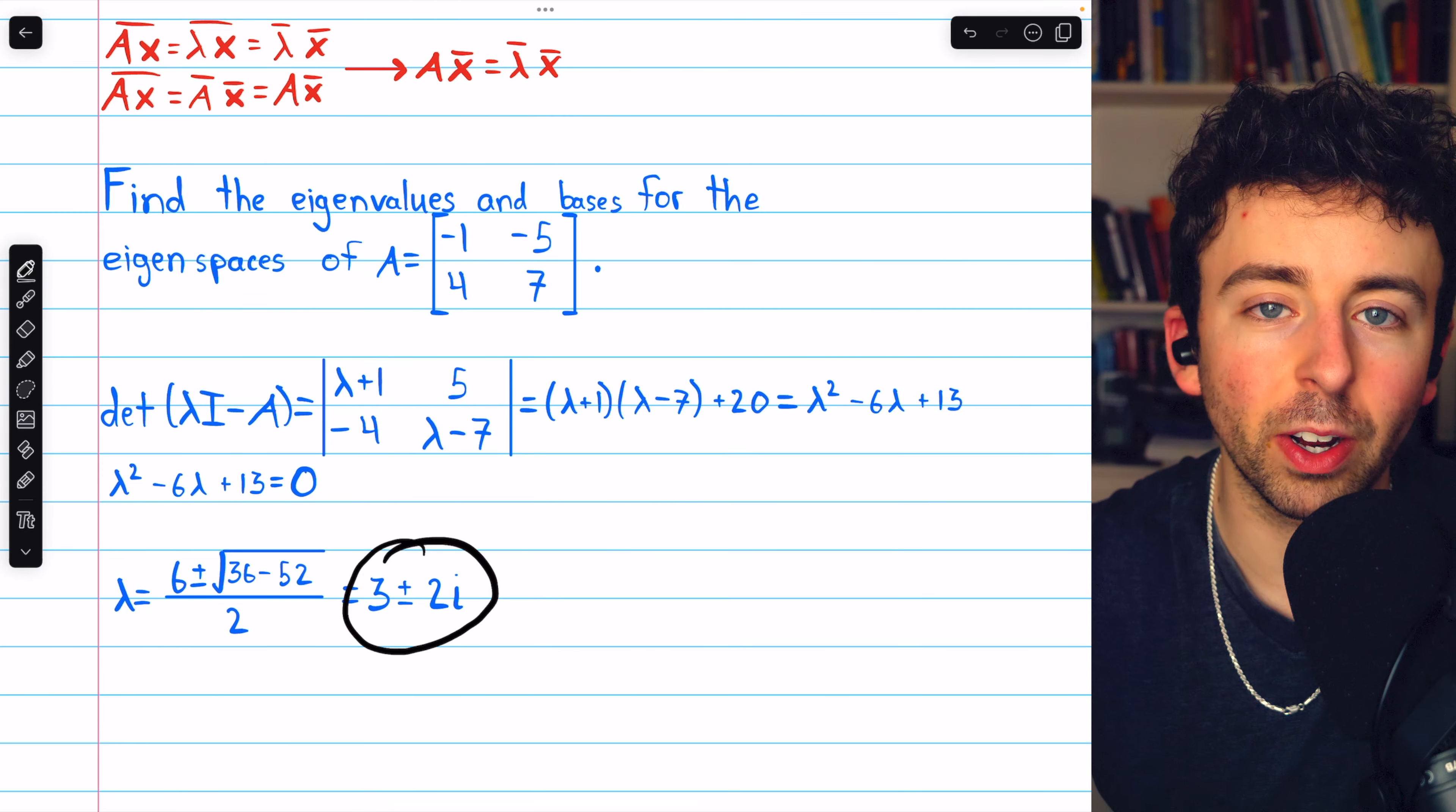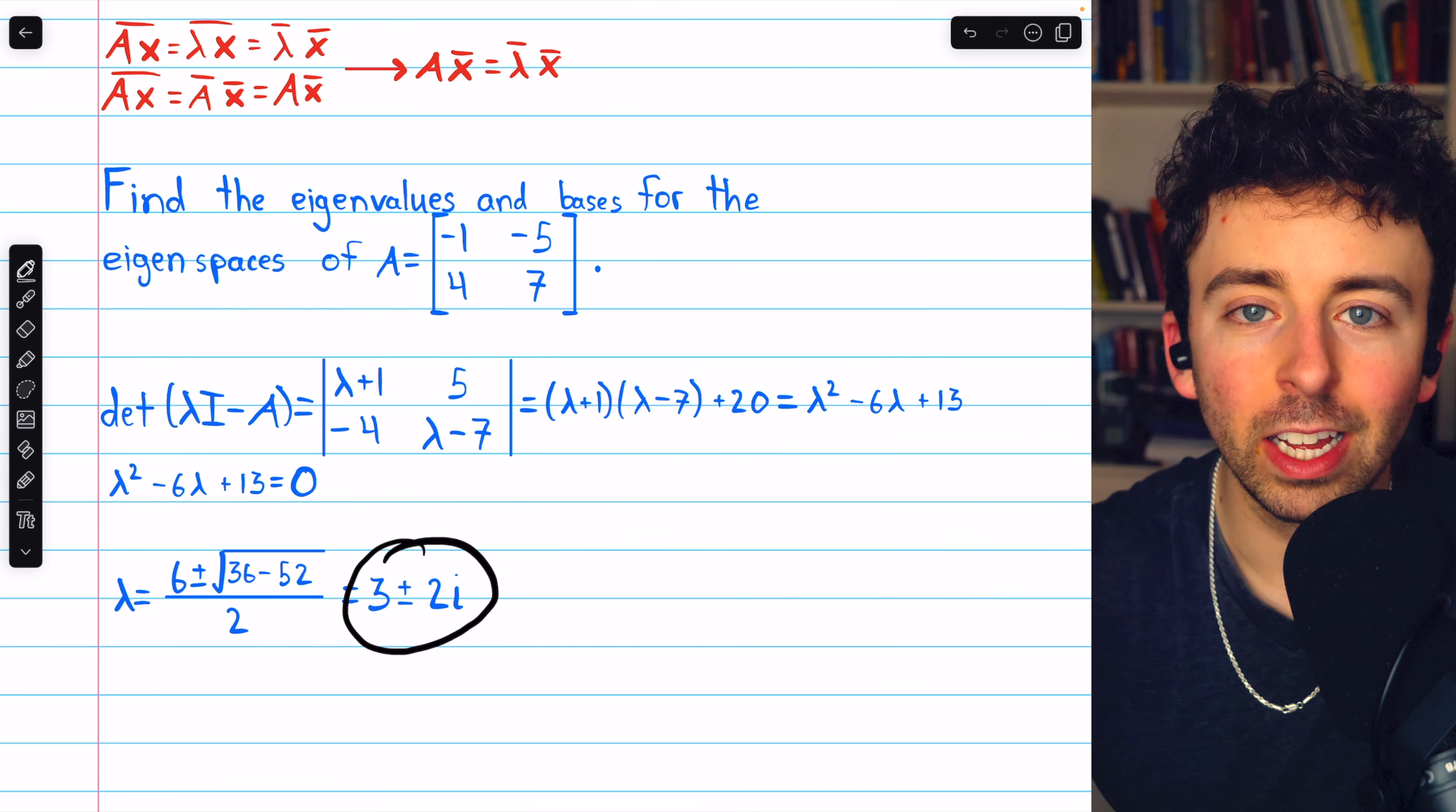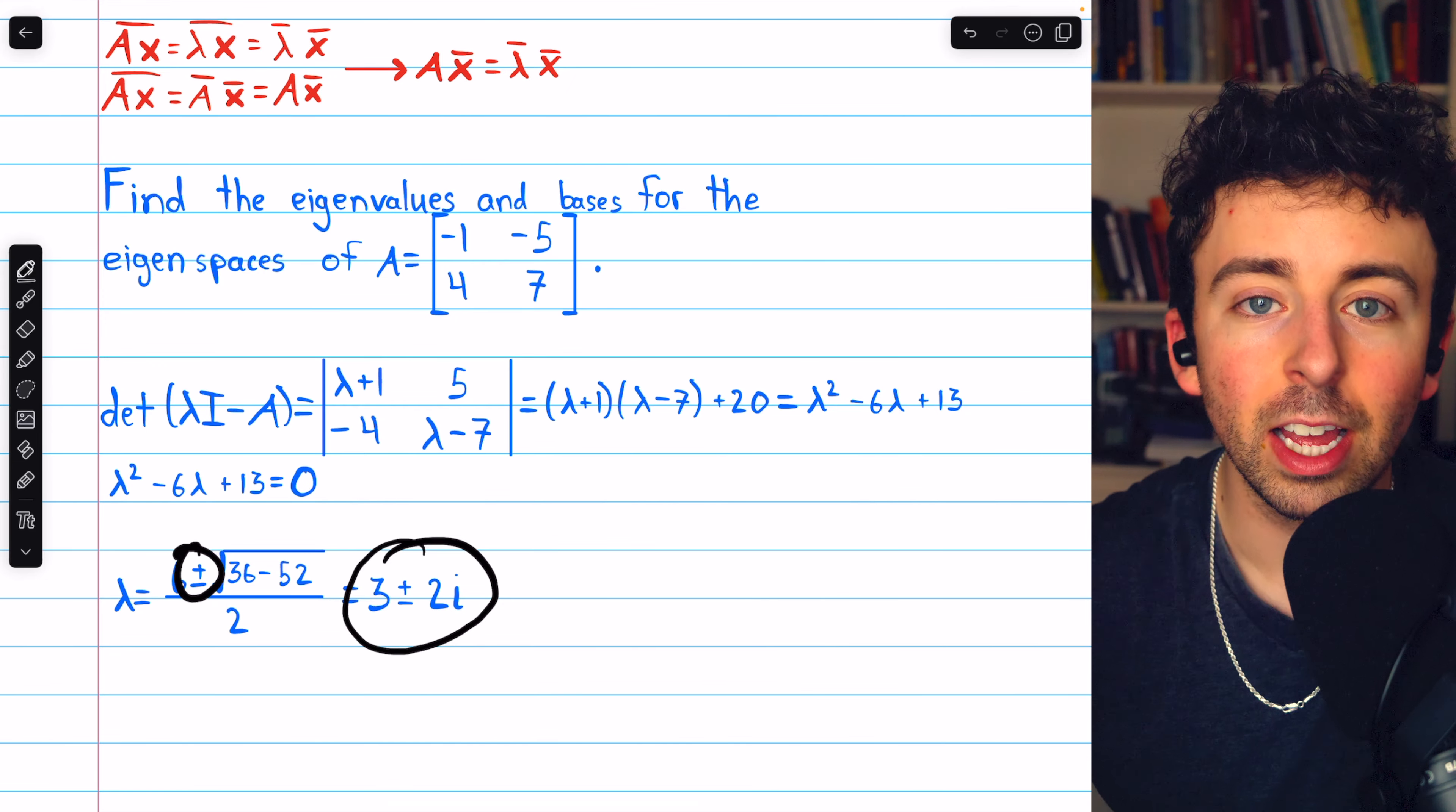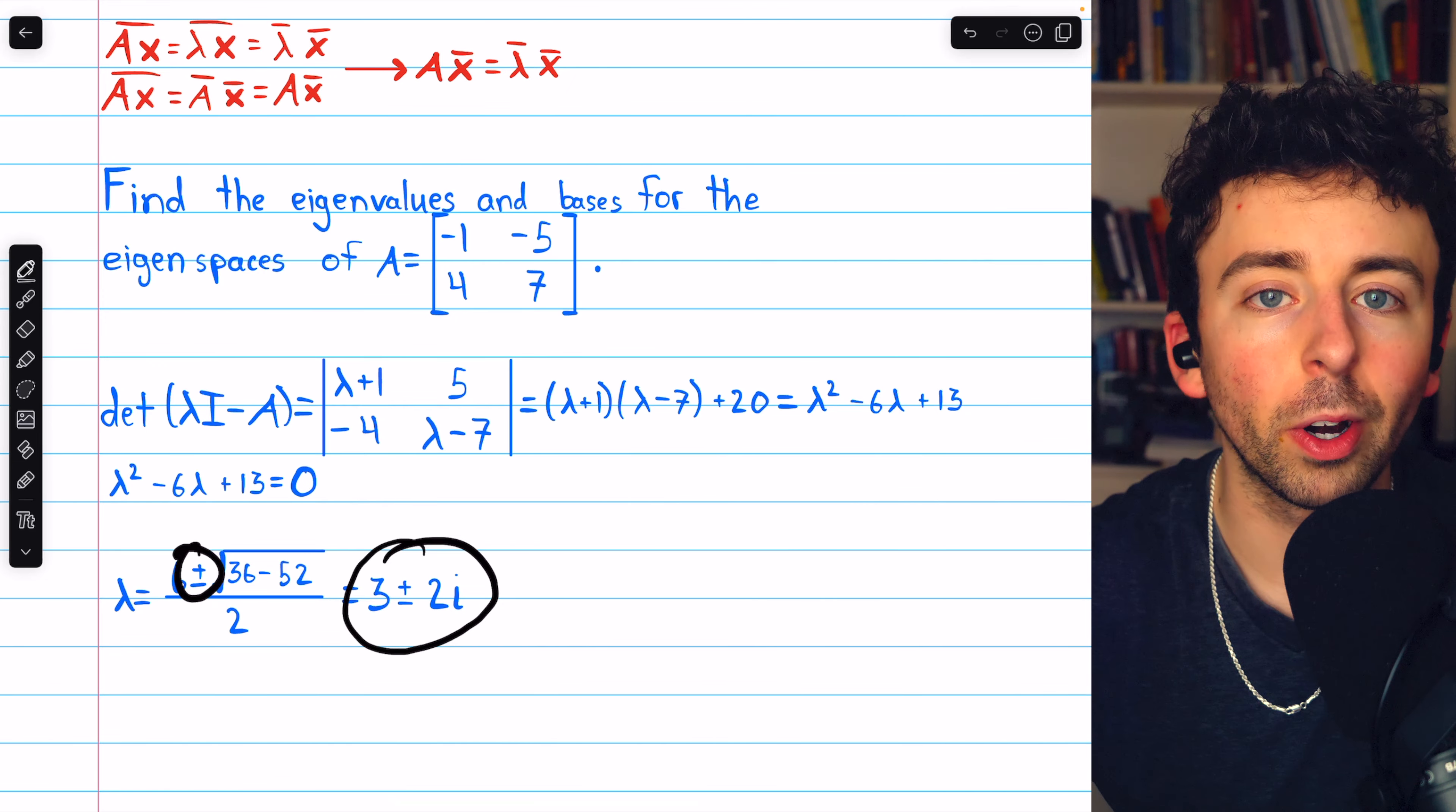Of course, we see that the eigenvalues have occurred in a conjugate pair, which is not surprising, just based on how the quadratic formula works. But we'll see the eigenvectors also work this way.